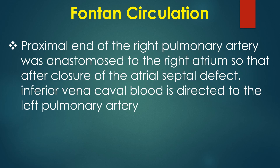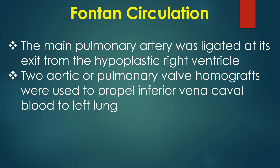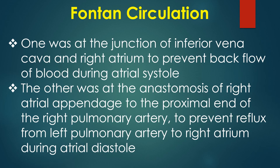The first step was a Glenn procedure in which the distal end of the right pulmonary artery was anastomosed to the superior vena cava. The proximal end of the right pulmonary artery was then anastomosed to the right atrium, so that after closure of the atrial septal defect, inferior vena caval blood was directed to the left pulmonary artery. The main pulmonary artery was ligated at its exit from the hypoplastic right ventricle. Two aortic or pulmonary valve homografts were used to propel inferior vena caval blood to the left lung.